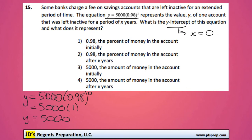In our list of solutions, number 1 and number 2 are incorrect because we just figured out the y-intercept is 5,000. The 5,000 represents the amount of money in the account initially. It doesn't make sense to say it's the amount of money in the account after x years.